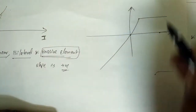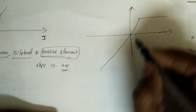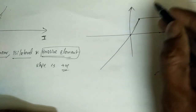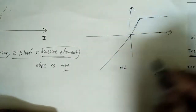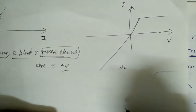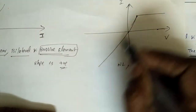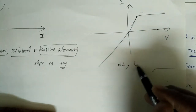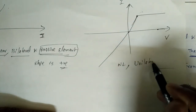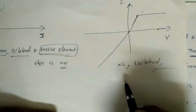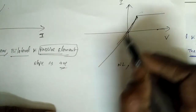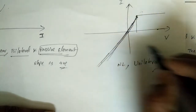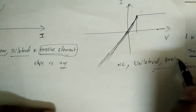For another example: if IV characteristics are straight up to a point but then curve, the overall characteristics are non-linear. If the shape differs in the first and third quadrants, it is unilateral. In the positive region the slope is positive, so in that region the element acts as passive.